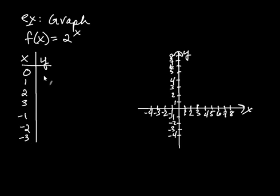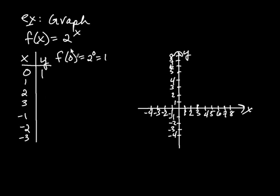When x is 0, f(0) = 2 to the 0, and anything to the 0 is 1. So when you plug in 0, out comes 1. When you plug in 1, 2 to the first is just 2. When you plug in 2, 2 squared is 4. When you plug in 3, 2 to the third is 8 — it's 2 multiplied by itself three times. Now when you plug in negative 1, something interesting happens.